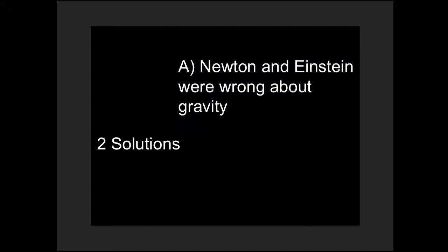So there are two solutions to this problem that galaxies should be flying apart. The first solution is that Newton and Einstein were in some way wrong about gravity, that something breaks down with it on larger scales. And the second possibility is there's missing matter, extra stuff in galaxies that we just don't see. So missing matter. For most of the last 40 years, we've been mostly concerned with the second one.